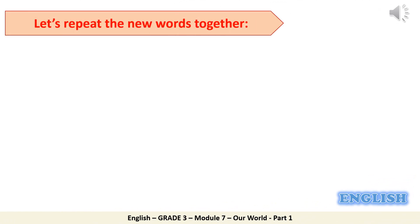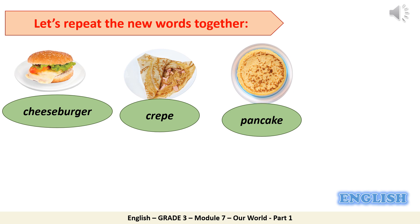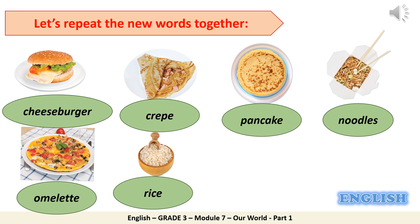Let's now listen and repeat the new words together. Are you ready? Let's get started. Module 7, 'Our World,' Unit 1 vocabulary: cheeseburger, crepe, pancake, noodles, omelet, rice. Excellent job!